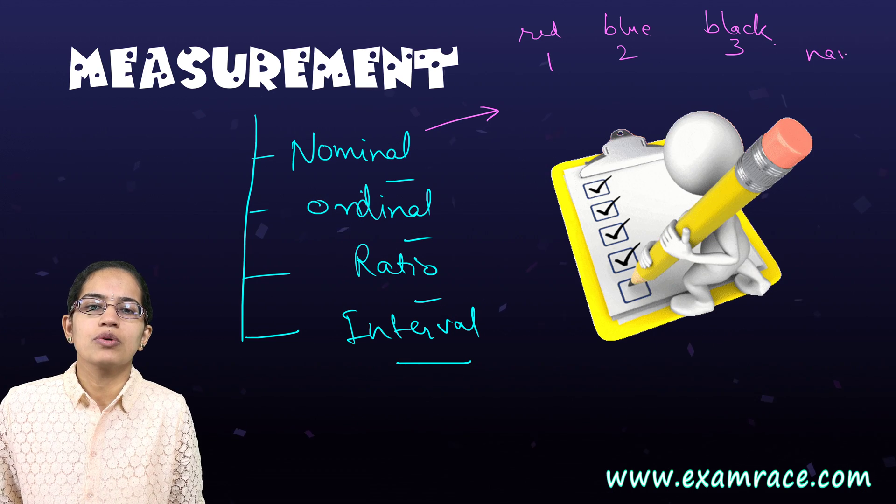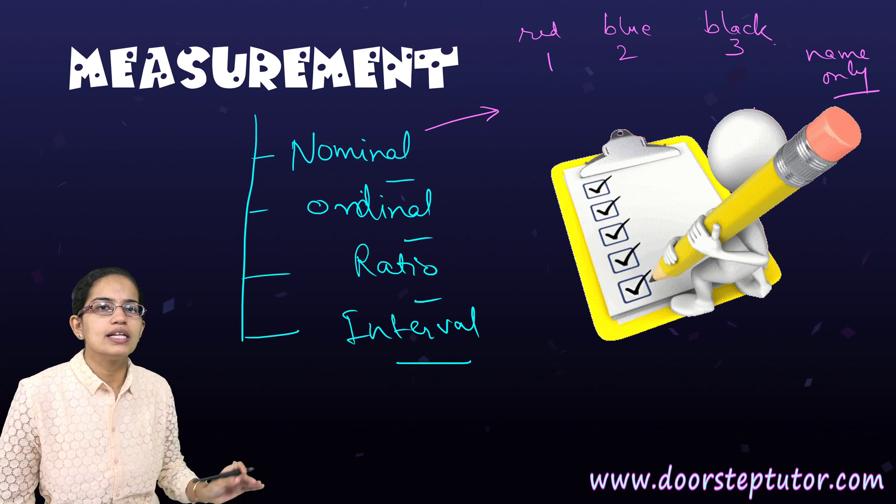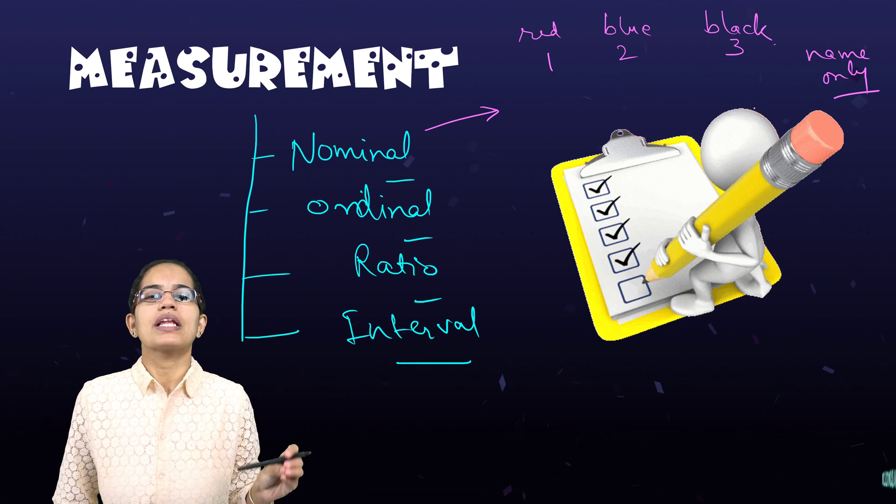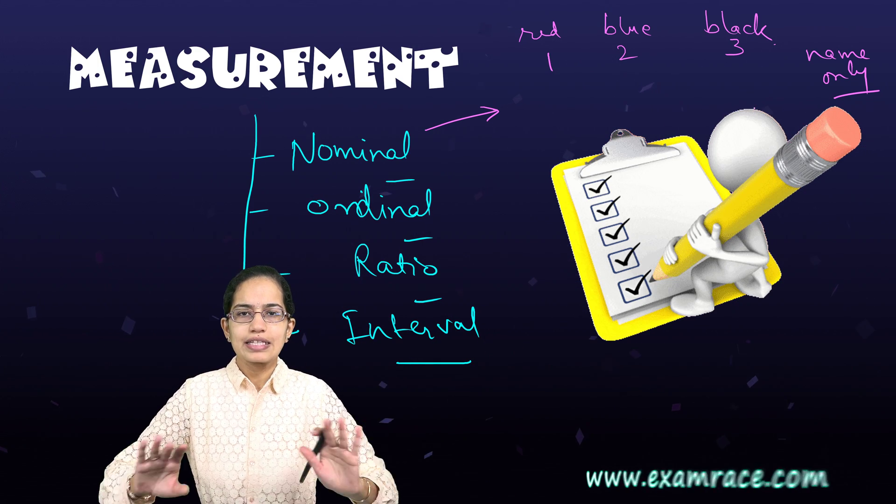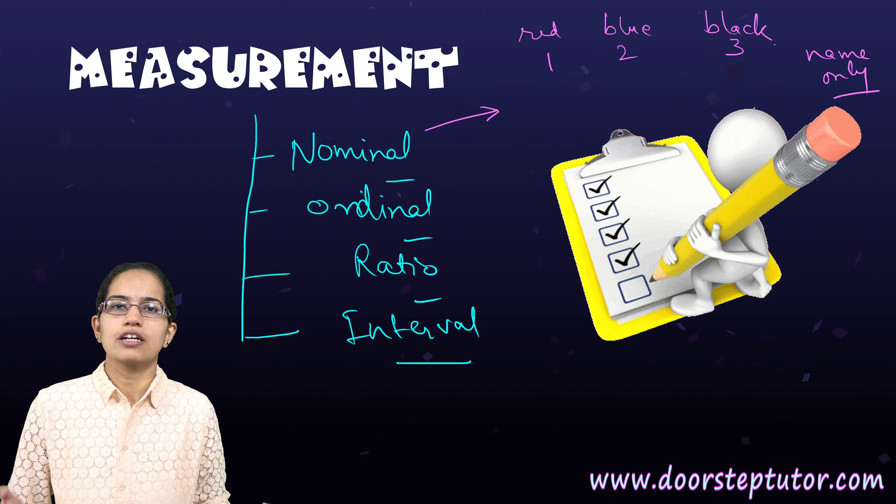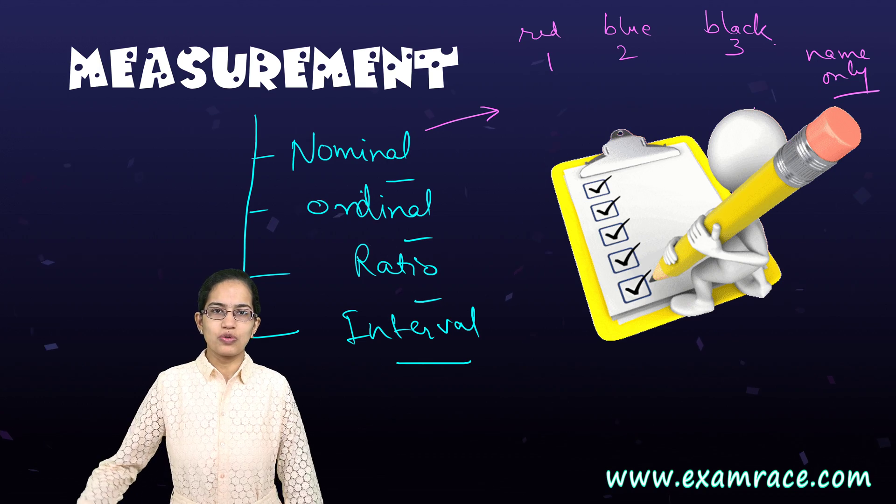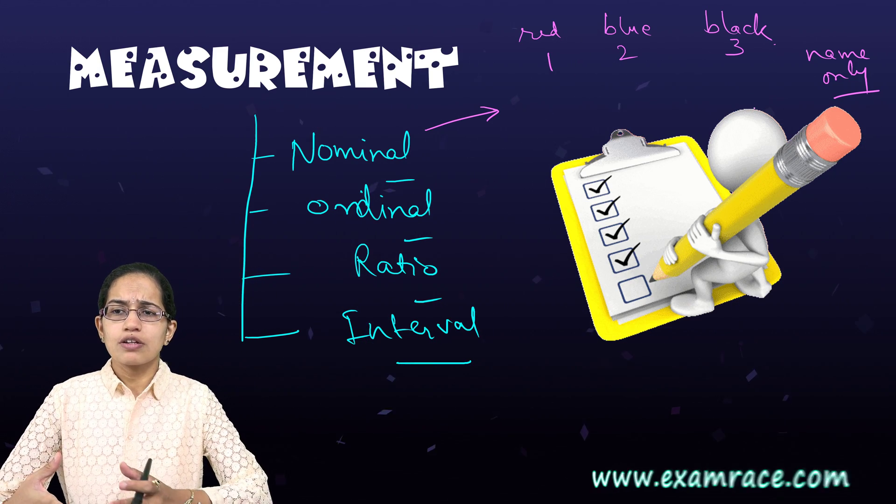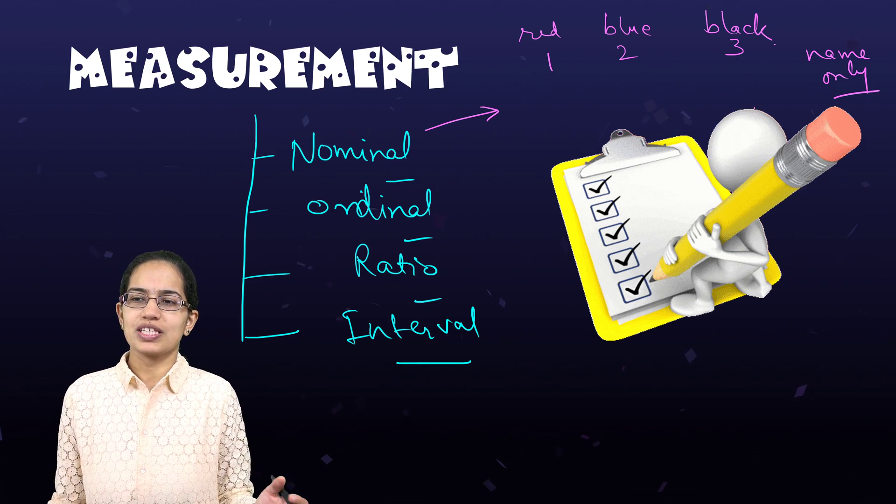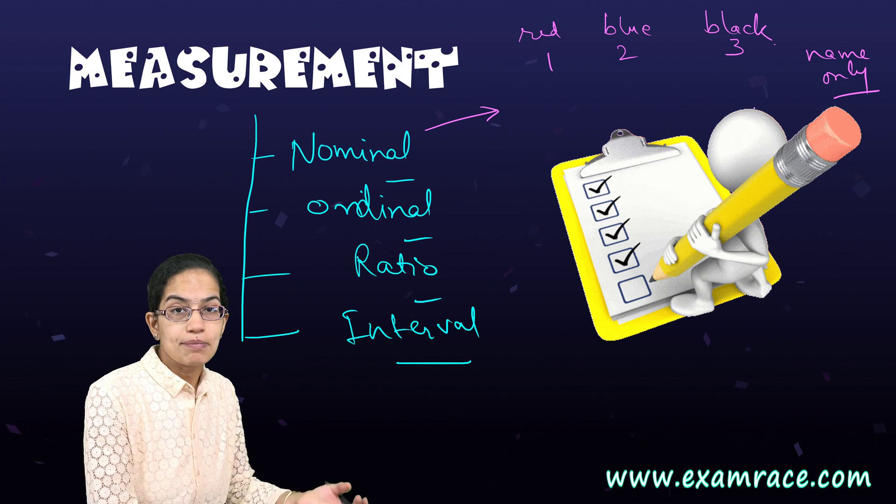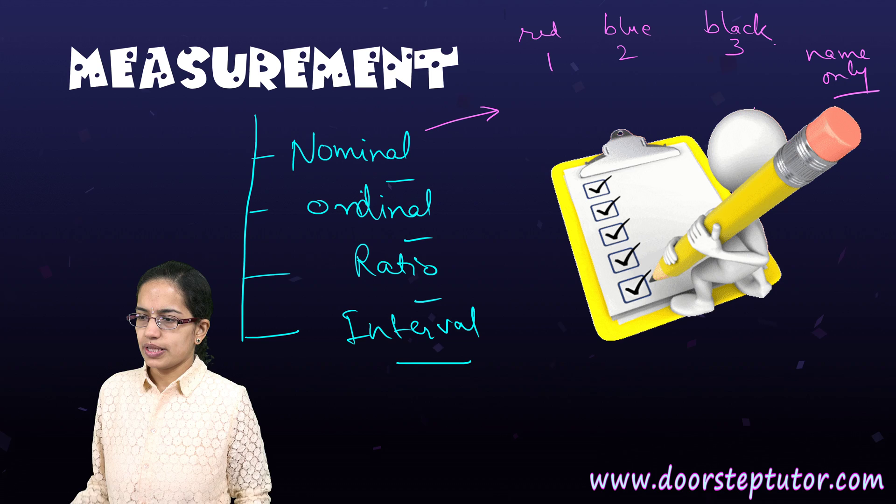So what I do for my convenience is I mark them as one, two, three, so it's name only. What I'm trying to give under a nominal measurement is simply a name. It does not mean there is any hierarchy, there is no ranking, nothing. It's just for the sake of convenience I am putting up my own simple names. Let's say you go to Russia and there you find huge, big names, so what you do is for your convenience you give them small abbreviations, and that's as simple as that. So that is nominal.